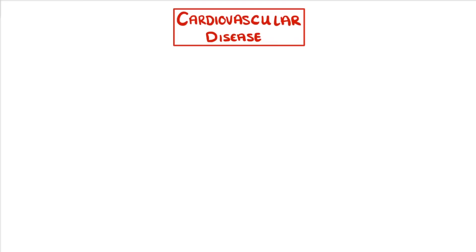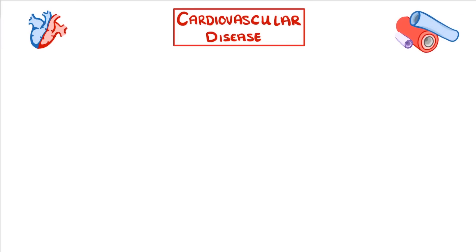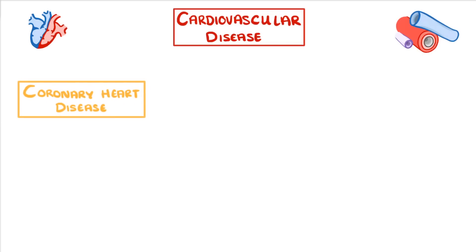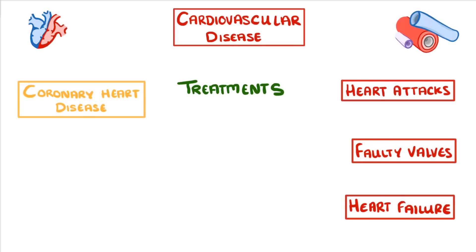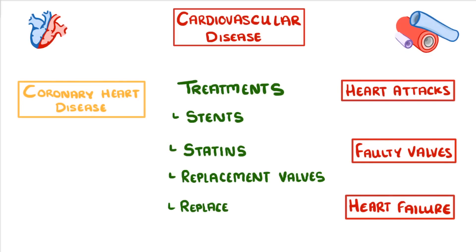Cardiovascular disease is a general term that refers to diseases of the cardiovascular system, which is basically the heart and the blood vessels. Examples of these diseases include coronary heart disease, heart attacks, faulty heart valves, and heart failure. The aim of this video is to take a quick look at these diseases but then mainly focus on the treatments that we can use to fix them, which includes stents, statins, replacement valves, and even replacement hearts.